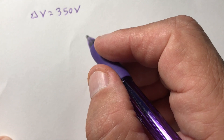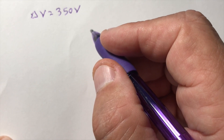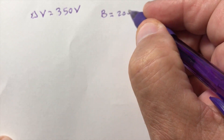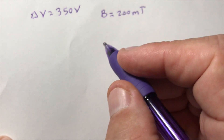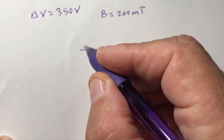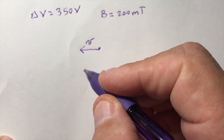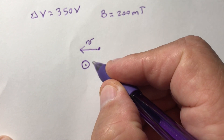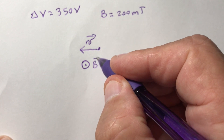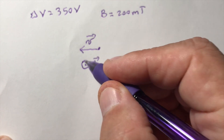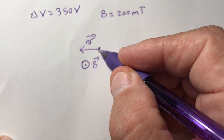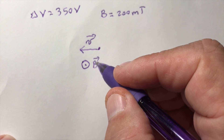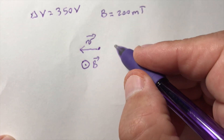The electron then enters a uniform magnetic field of magnitude 200 millitesla, so B = 200 mT. We draw the electron moving to the left, with the magnetic field coming out of the board — perpendicular to the velocity. A force is going to be created.